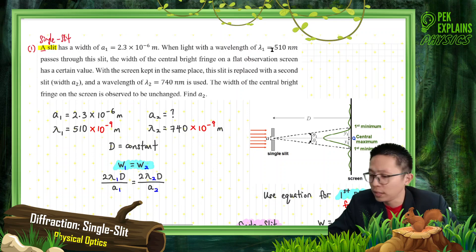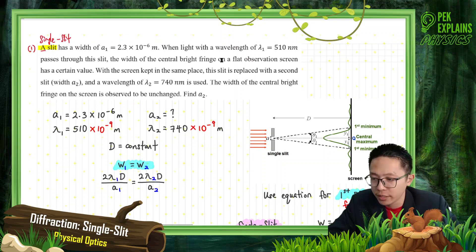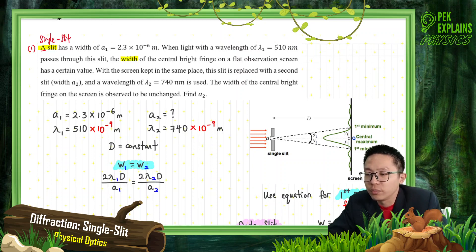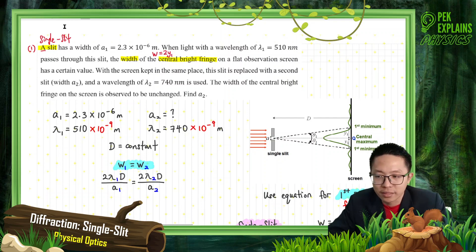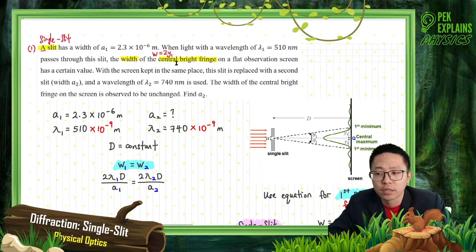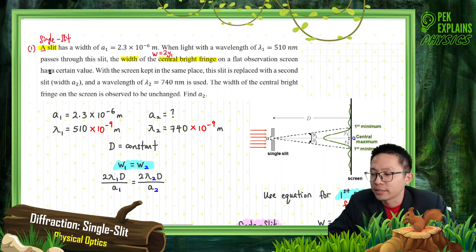That means you have two lights — you have lambda 2 also. So lambda 1 and lambda 2 pass through the slit. He's talking about the width of the central bright fringe. That means this is talking about W, which is equal to 2Y1. Remember this one? 2Y1 depends on the first dark fringe formula, because the first dark fringe is the wall for the central bright fringe.